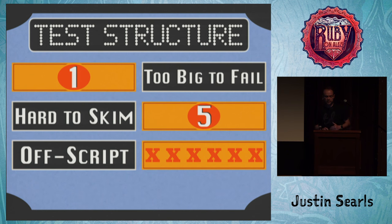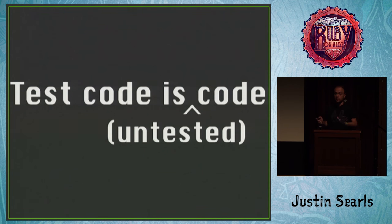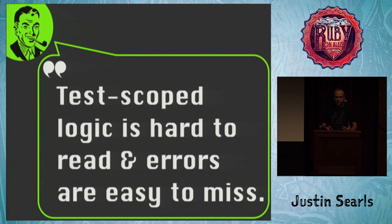The next thing people hate about tests is hard-to-read tests. Some people say 'test code is code,' implying you should take it seriously. But in my mind, test code is untested code, which means it should be treated with derision and skepticism — and minimized. In particular, logic in tests confuses the story of what's being tested. By logic I mean ifs, elses, branches, loops. Test-scoped logic like that isn't only hard to read because it obfuscates the script we just talked about, but any errors in there are really easy to miss because no one's testing the test.